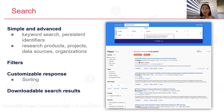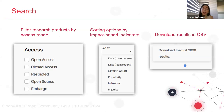On top of the advanced search page, you can see a more advanced search form offering a variety of fields which you can combine to express more complex queries. There is, for example, the access filter which you can use to combine access modes and filter research products. You can see sorting options including impact-based indicators such as citation count, popularity, influence, and impulse.